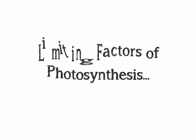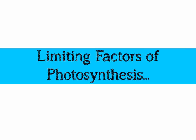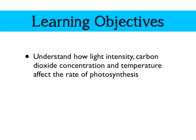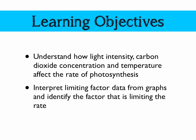In this video we're going to be looking at the limiting factors of photosynthesis and how each of them affects the light dependent reaction and the light independent reactions. We're going to understand how light intensity, carbon dioxide concentration and temperature can affect the rate of photosynthesis. Then we're going to look at some graphs and interpret limiting factor data from these graphs and identify the factor that is limiting the rate in each case.